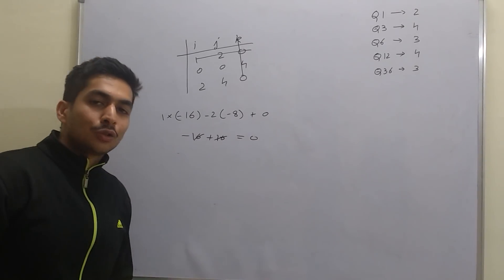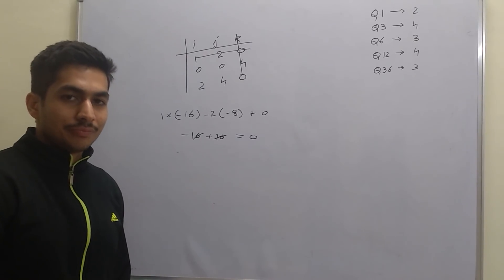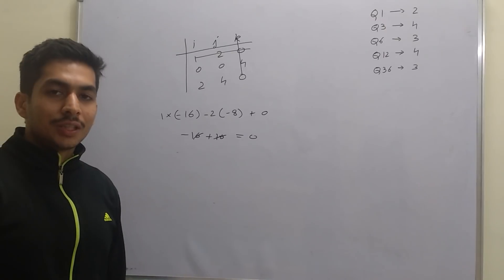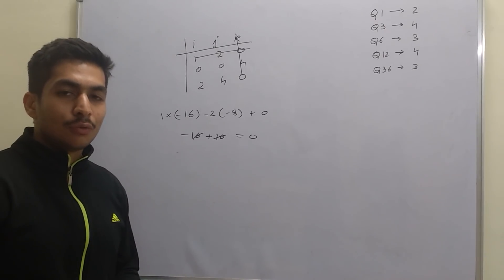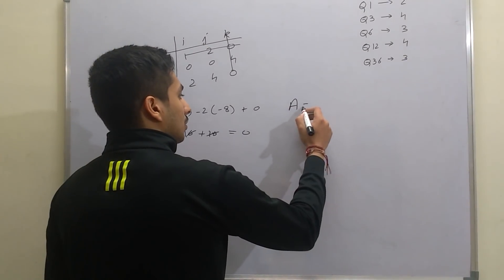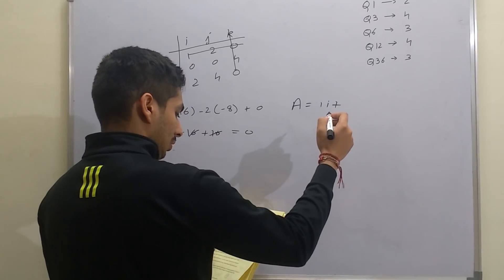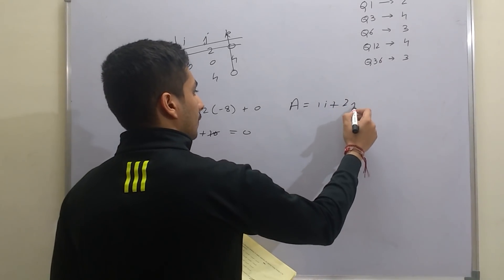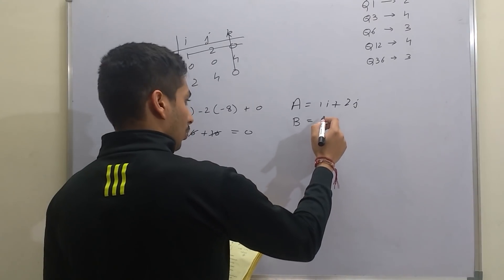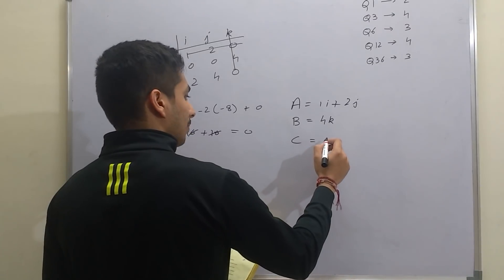There is a shortcut way to solve this. It is a 3D structure, and a volume will only be present in a 3D structure - a 2D structure does not have any volume. Looking at the given coordinates: A is 1i + 2j, B is 4k, and C is 2i + 4j.